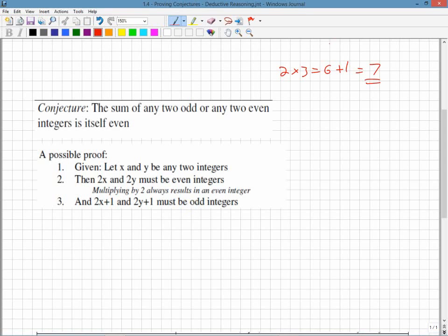So we have 2x and 2y. That's the first part. This is number 2. And number 3 we'll do over here. So the conjecture is the sum of any two odd or any two even integers is itself even. Even. Always even. Sum. Sum means addition. So for the first one, 2x and 2y, I can add those. 2x plus 2y.